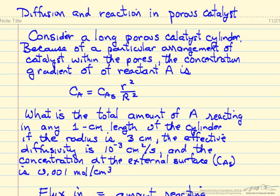In this example, we're going to look at diffusion and reaction in a porous catalyst where the catalyst is a long cylinder. Under special conditions, because of the arrangement of the catalyst, we know the concentration as a function of radial location r.